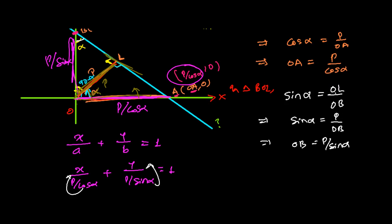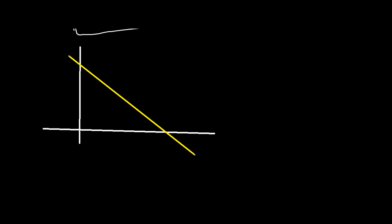Let me show you an example. Suppose we have a line, and we know the length of the perpendicular from the origin to that line is 2 units, and the angle made by that perpendicular is 45 degrees. What is the equation of this line? Using the normal form: x cos α + y sin α = P.